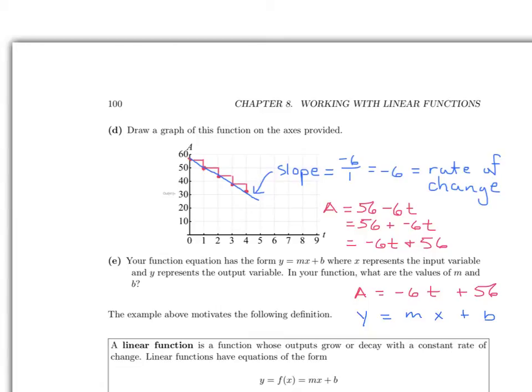Well, you can see now that the y corresponds to the A, the negative 6 corresponds to the m, the t corresponds to the x, and the 56 corresponds to the b. So in our function, m is negative 6, and b is 56.